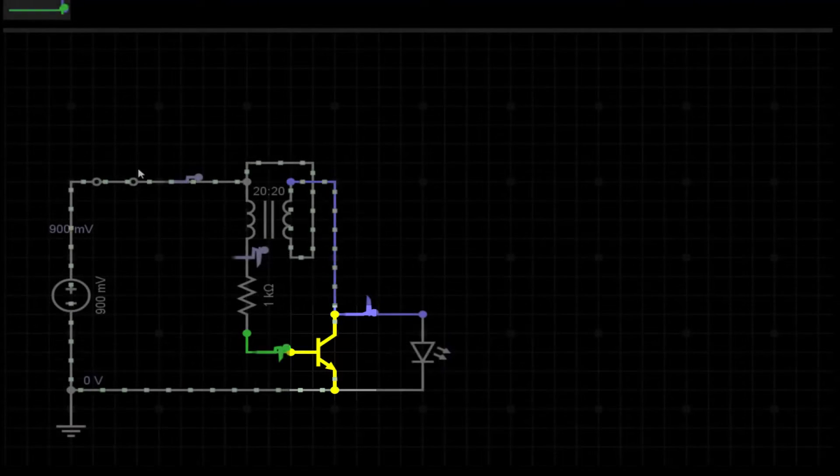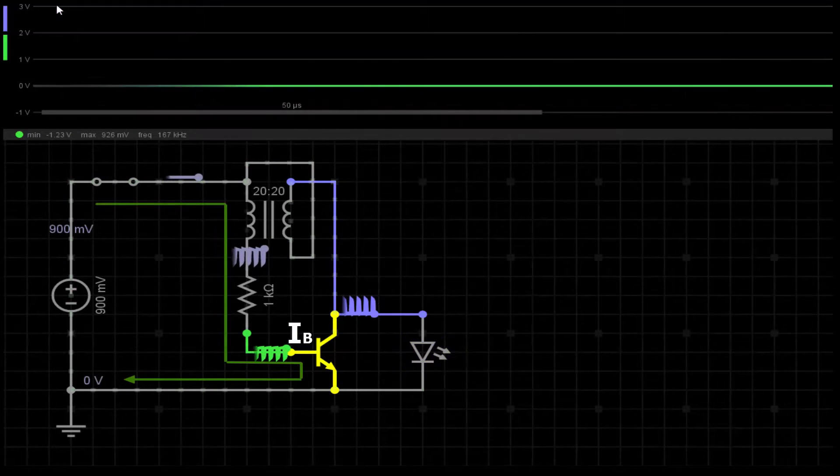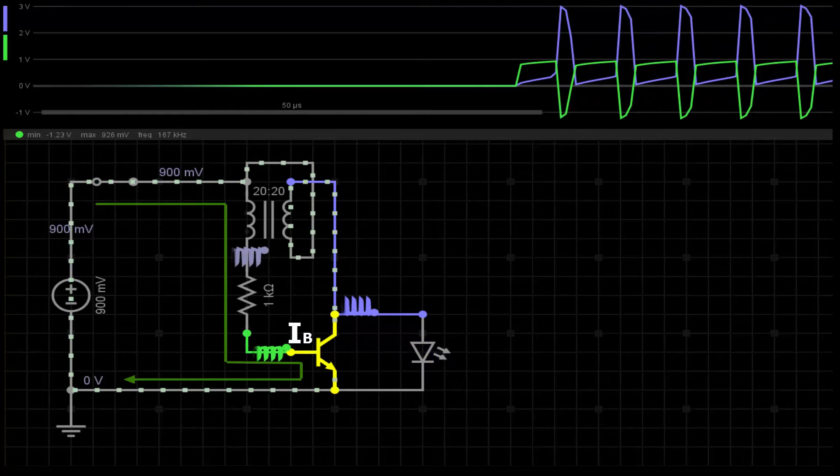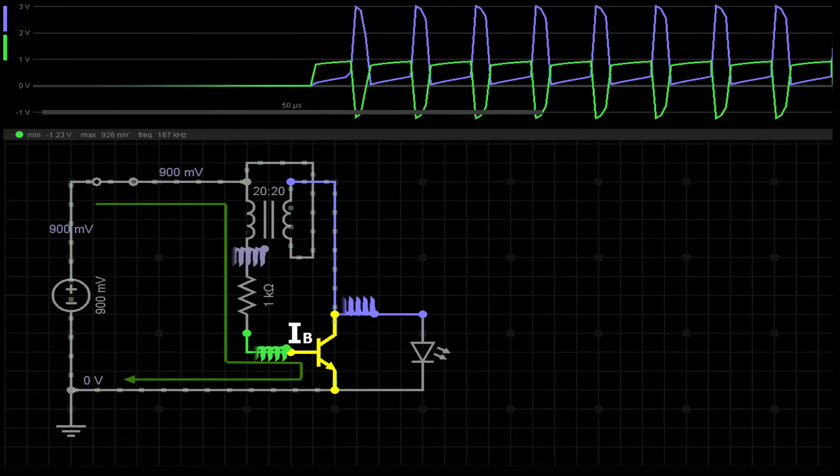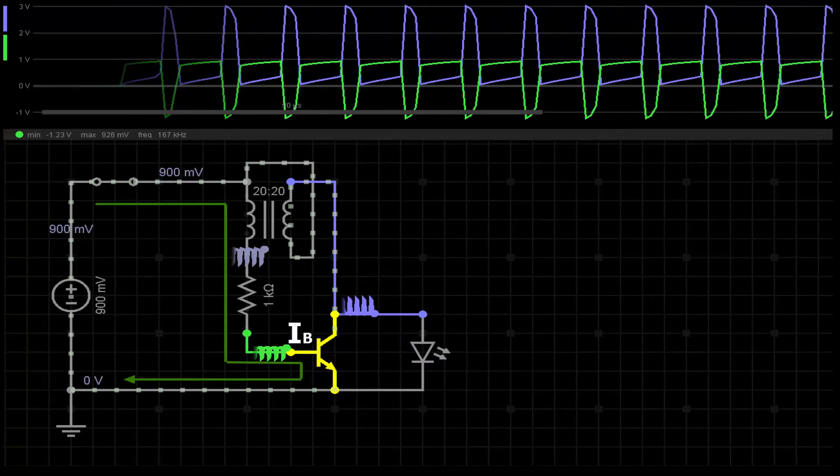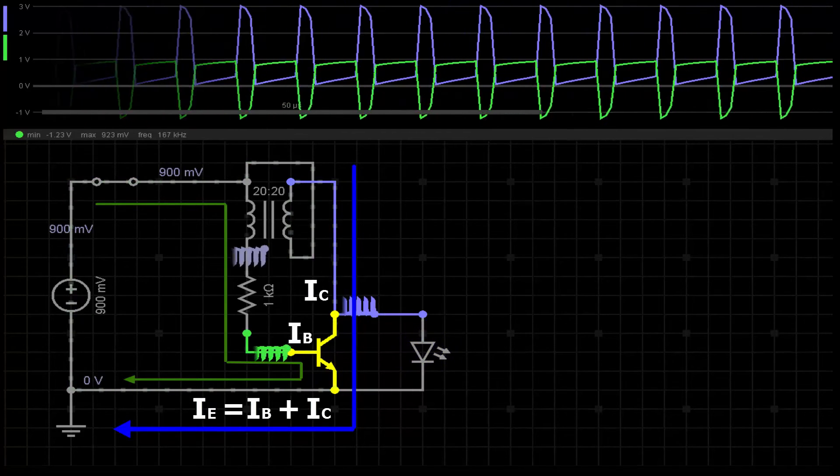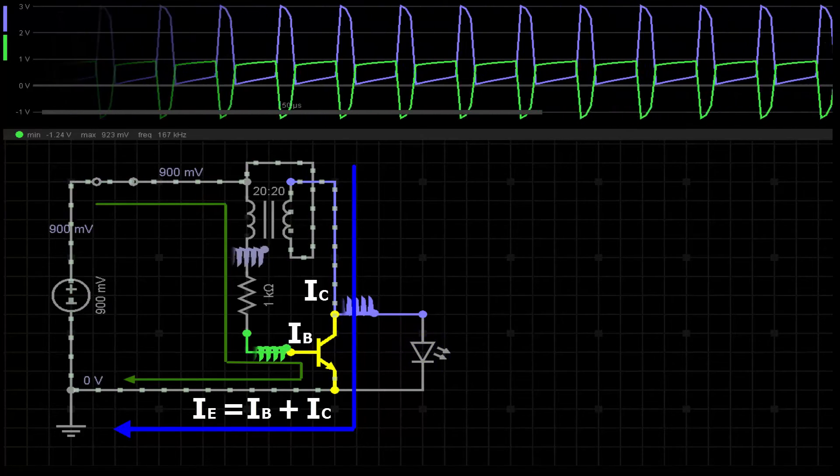When I turn on the circuit, a current flows through the first coil, the resistor and the base emitter junction of the transistor. The transistor starts to conduct, causing a current to start flowing through the second coil to the collector emitter path.